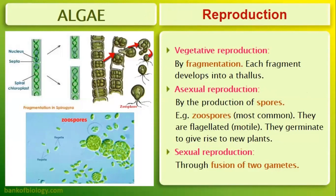Reproduction in algae: vegetative reproduction is by fragmentation — algae grow and the fragments can develop into new thallus. Asexual reproduction is by production of spores. These spores can be either motile or non-motile; they are flagellated zoospores which germinate to give rise to new plants. Asexual spores don't need fusion or fertilization — they are flagellated, motile zoospores that germinate directly.